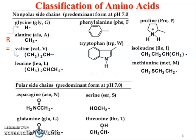Non-polar side chains predominant at pH 7: Glycine (GLY), single letter code G; Phenylalanine (PHE), code F; Proline (PRO), code P; Alanine (ALA), code A; Valine (VAL), code V; Tryptophan (TRP), code W; Isoleucine (ILE), code I; Methionine (MET), code M; and Leucine (LEU), code L. These are the non-polar side chain amino acids.